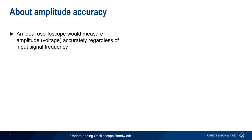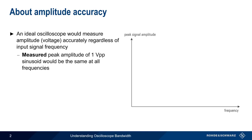Fundamentally, bandwidth affects the accuracy of measured amplitudes. An ideal oscilloscope would provide an accurate measurement of amplitude — that is, voltage — regardless of the frequency of the signal. For example, if our input signal were a sinusoid with an amplitude of 1 volt peak-to-peak, an ideal oscilloscope would show a measured value of 1 volt peak-to-peak, regardless of the frequency of the sinusoid.